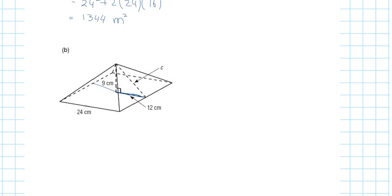Even if they don't label this as 12, you need to know it's half of your side. If I drop a perpendicular line from the apex to the base of a square pyramid, it lands in the exact center, so the horizontal leg of the right triangle is half the base length. So if the full side is 24, that distance is 12.